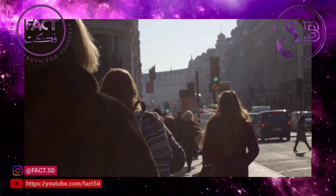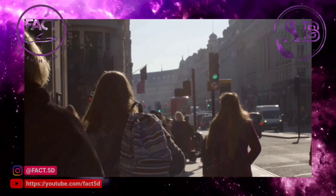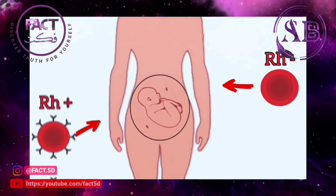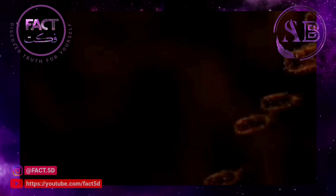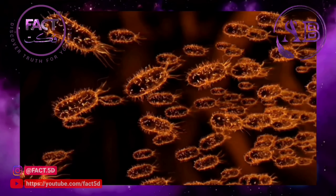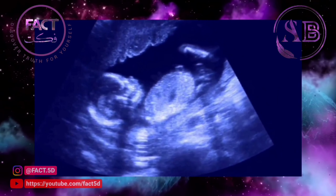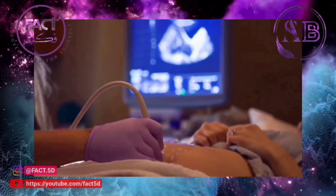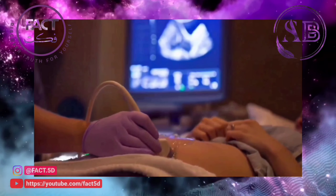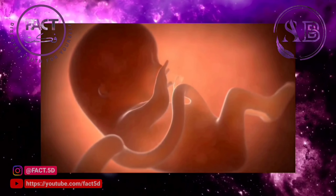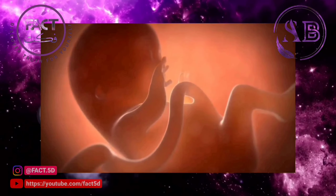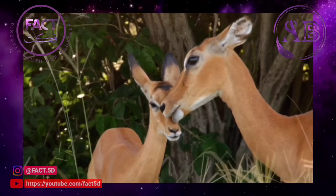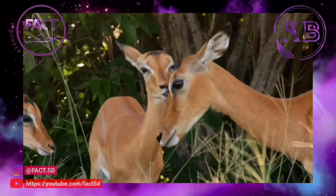If all humans are of the same species, then why does hemolytic disease occur in humans? If a woman with RH negative blood becomes pregnant with an RH positive baby, her body produces antigens that signal to her immune system that her fetus is essentially a toxin — in fact, a woman's body destroys her fetus. Hemolytic disease is an allergic reaction that occurs when the mother is RH negative and the baby is RH positive. Why does a mother's body destroy her children? Nowhere in nature does this happen naturally.